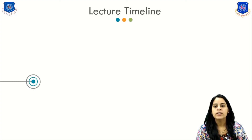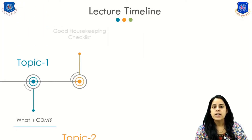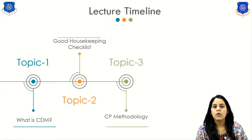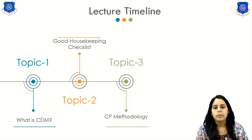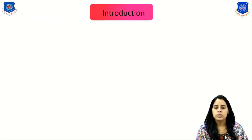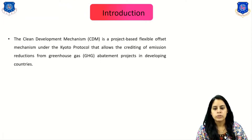In today's lecture, we will discuss three topics. Topic number one is what is CDM, which means Clean Development Mechanism. Topic number two is a housekeeping checklist, and topic number three is Cleaner Production Methodology. So let's start with topic number one: what is CDM? First, we discuss the introduction part of Cleaner Production.